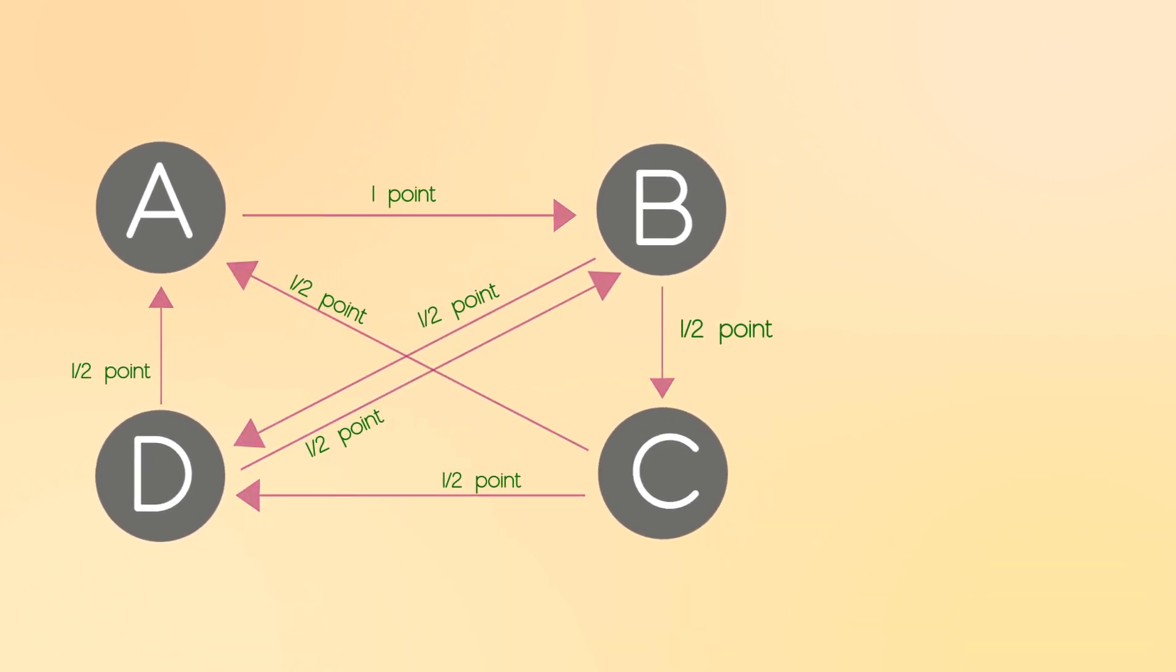Now we're going to organize all these numbers in a matrix. Each row and column will refer to one of the websites, so I'm just putting the letters here to make things easier to follow. The first column will be the points that site A gives out. So it gave zero points to itself, one point to site B with that one link, no points to site C, and no points to site D.